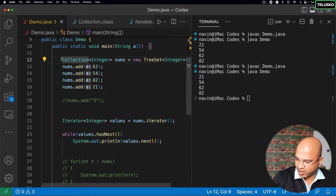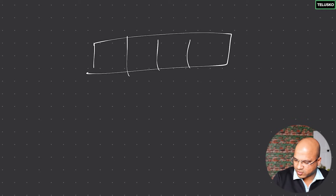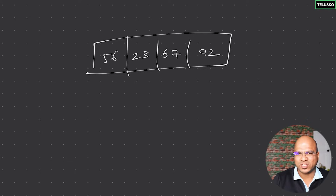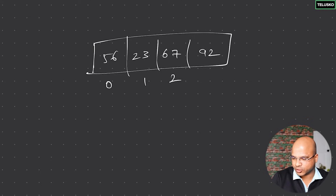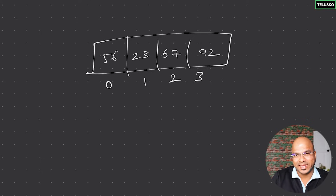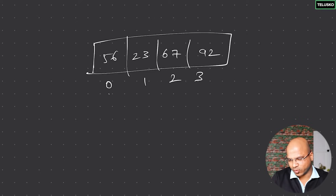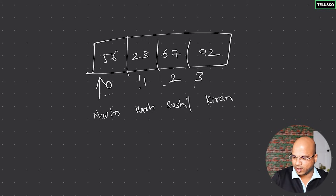Why do we need Map? When you work with a List, say we have values like 56, 23, 67, and 92, you work with indexes: 0, 1, 2, 3. But sometimes it's better to have a name or a different kind of index. For example, in a phone book you have a name and a number. So for student marks, I want to say this mark belongs to Naveen, this belongs to Harsh, this belongs to Sushil, and this one to Kiran — instead of an index value, can we have a name?